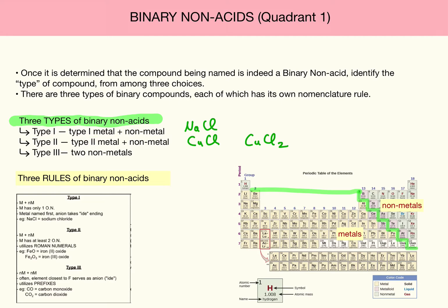In contrast, a type 1 metal only has one way it can combine with a non-metal. More later on how to differentiate a type 1 from a type 2 metal. But for now, just know there are two types.